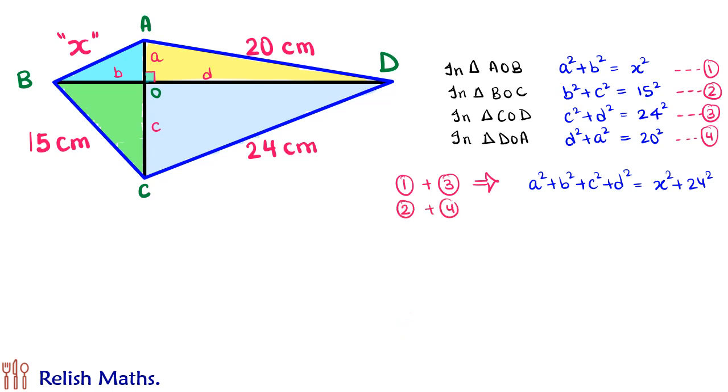Same way if we add equation 2 and 4, we will get b² + c² + d² + a² = 15² + 20².